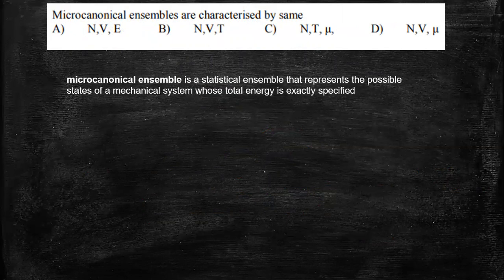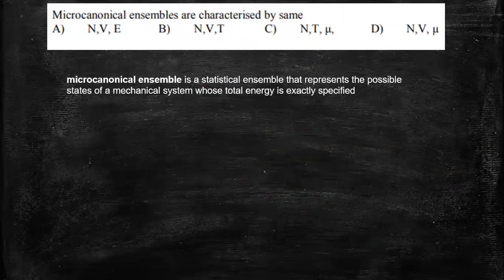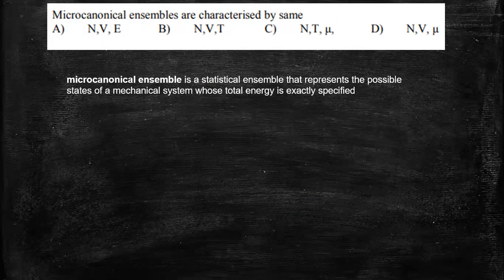So microcanonical ensemble is a statistical ensemble that represents the possible states of a mechanical system whose total energy is exactly specified. So here if you look at, there should be total energy should be specified. So only one option is there which shows the total energy. So that itself is the answer option A, N, V, E.